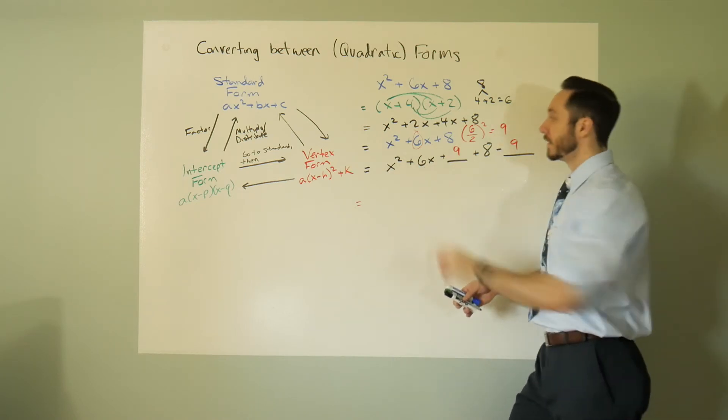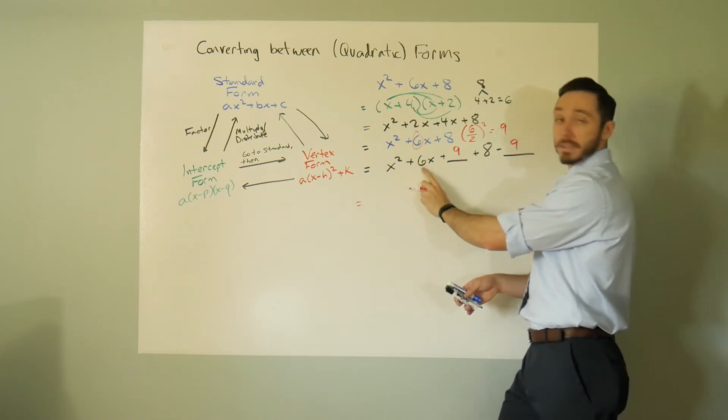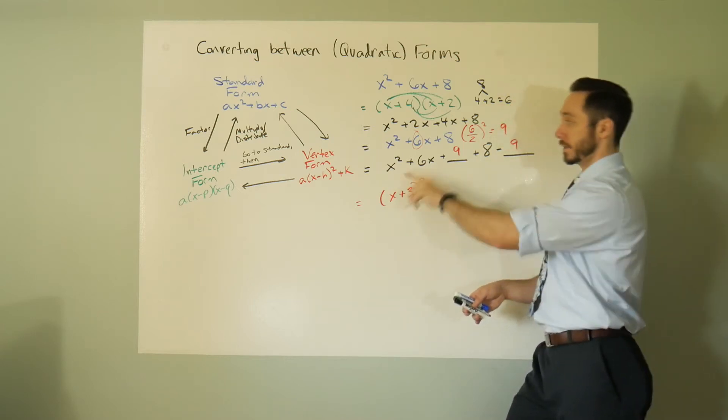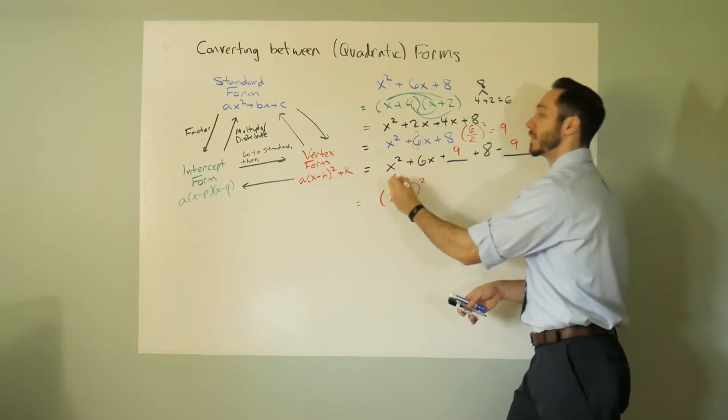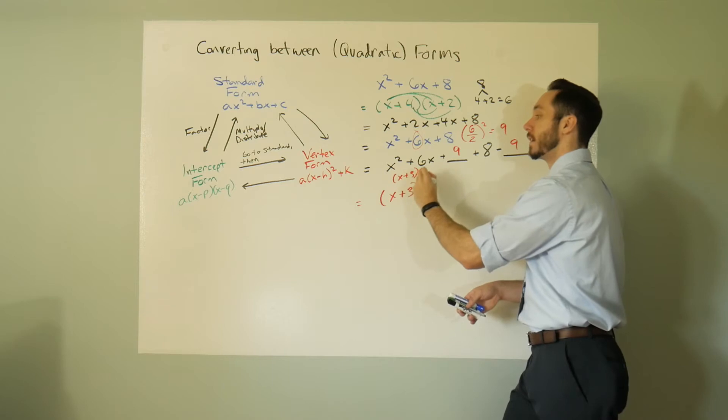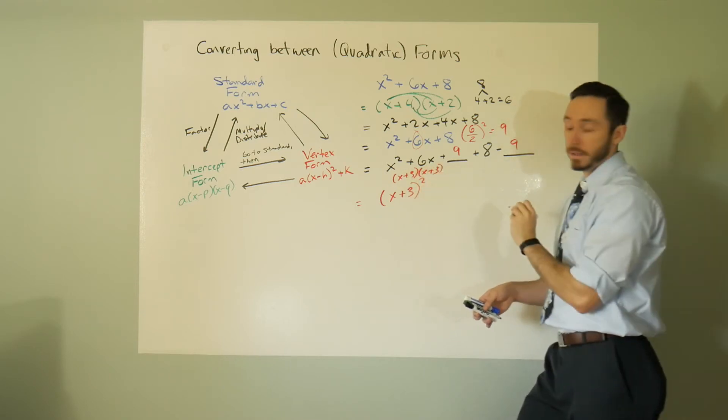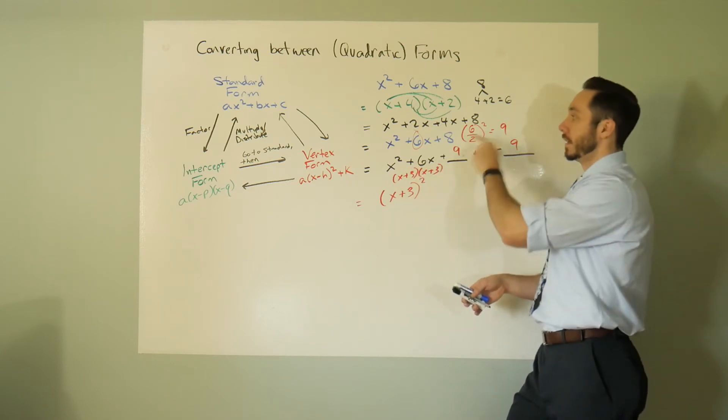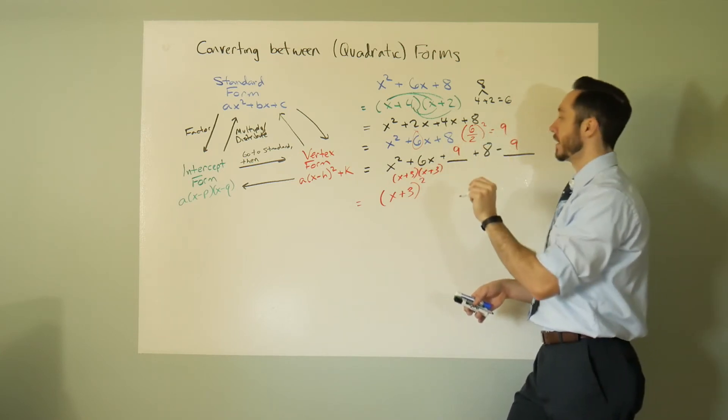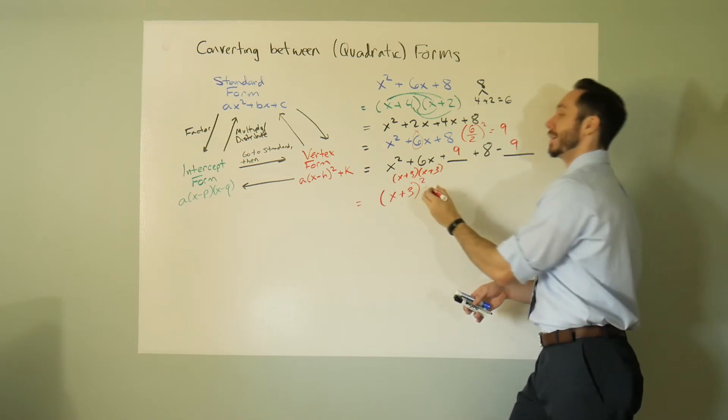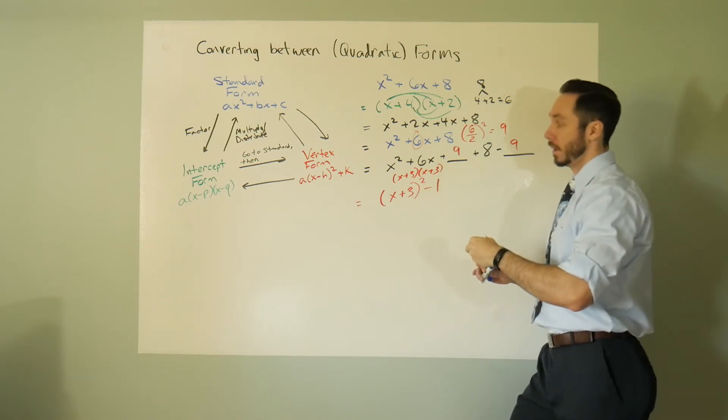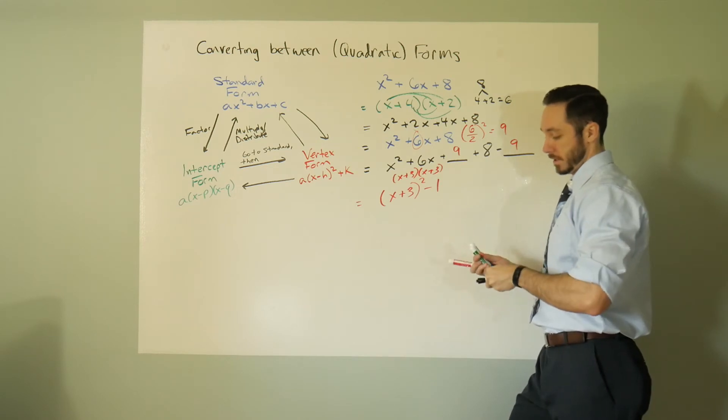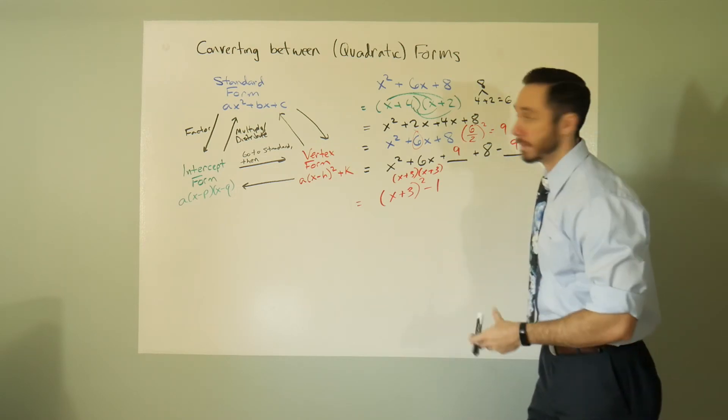What two numbers multiply into 9 and add into 3 or add into 6? The answer is 3, right? 3 times 3 is 9 and 3 plus 3 is 6. So x plus 3 all squared is this expression. It factors as x plus 3 times x plus 3. 8 minus 9 is negative 1.